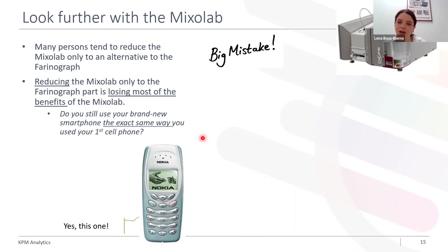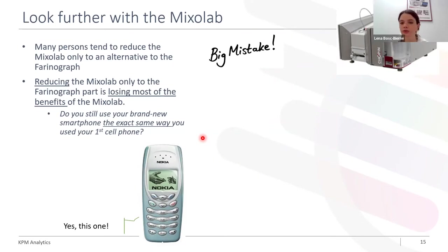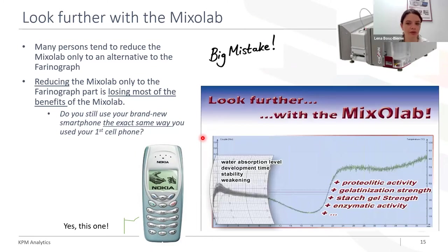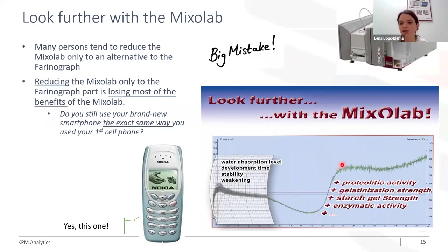It would be a little bit like using your smartphone the exact same way as you would use your first cell phone. I use my smartphone daily to go online, check social media, use GPS, check emails — very different things I couldn't do with my first phone. I can still make calls. With the MixoLab, you can make calls — you can have the Farinograph data from the first phase — but you also have access to five times more information about protein resistance, gelatinization, retrogradation, enzymatic activity. This is truly a goldmine of information.